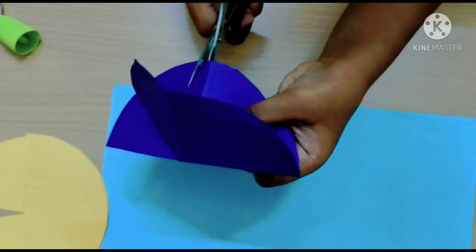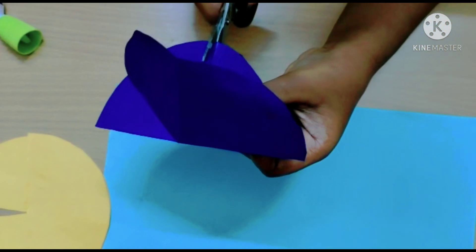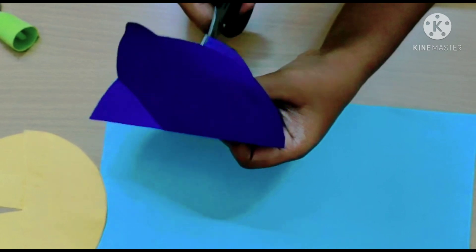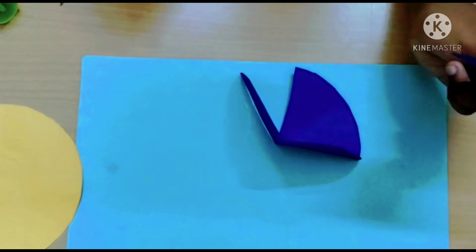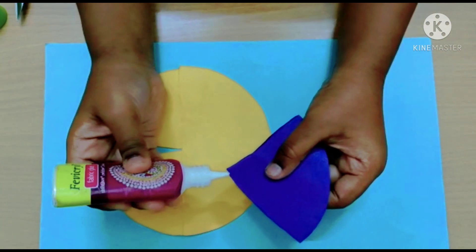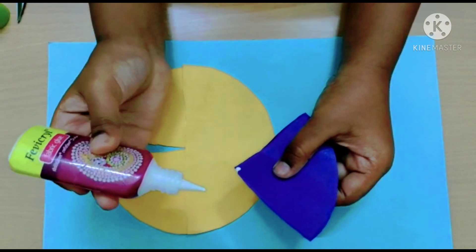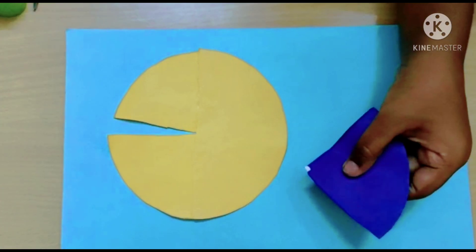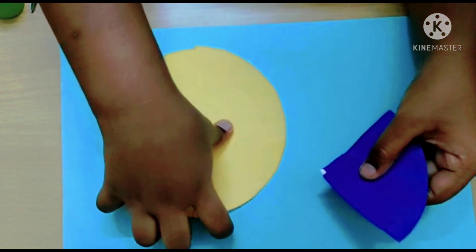I am going to cut one quarter now. Apply a little glue over here and stick it to the fish. This is going to be your fish tail.